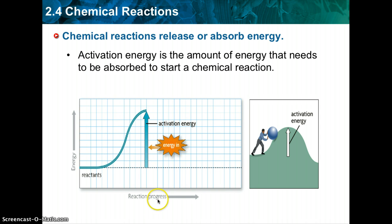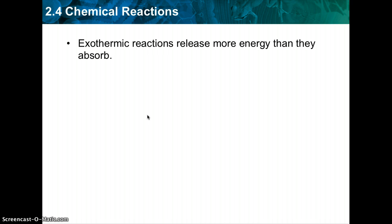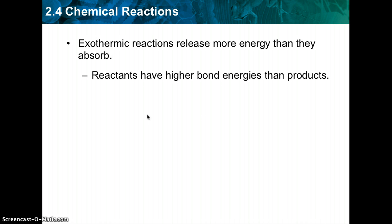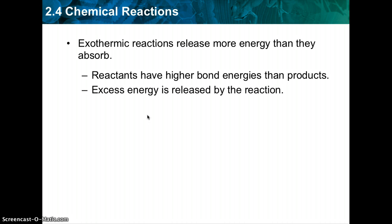As you can see, we have reaction progress and energy. As we increase the energy, once you hit the activation energy, you have enough energy for the reaction to occur. An exothermic reaction is when energy is released. Reactants have higher bond energy than products — reactants are on the left, products on the right. Excess energy is released by the reaction, and the difference in bond energy between reactants and products is released to the surroundings.